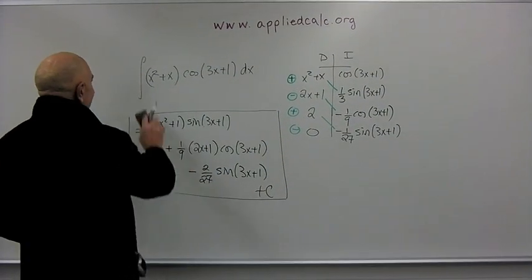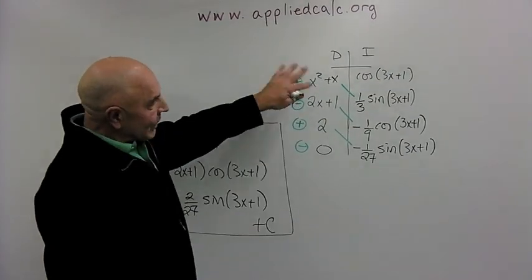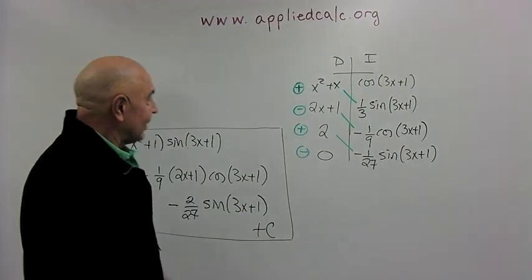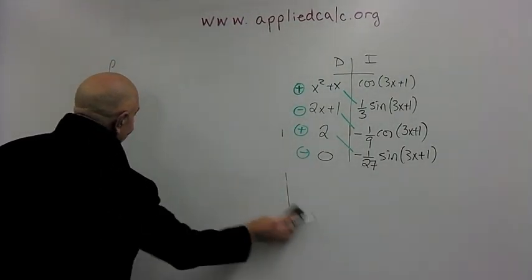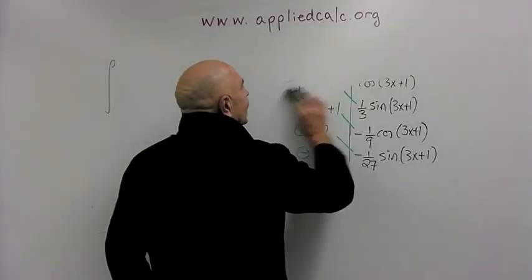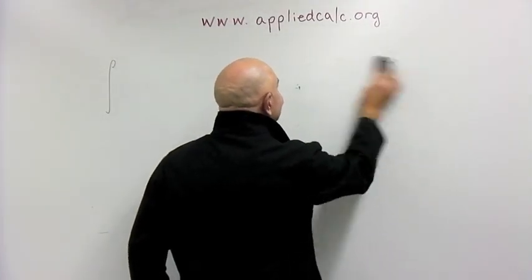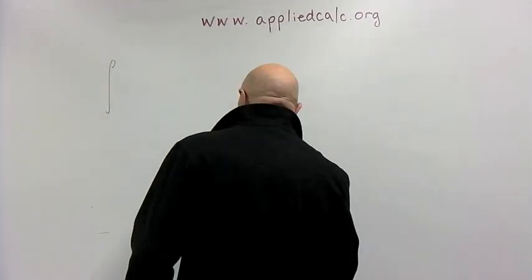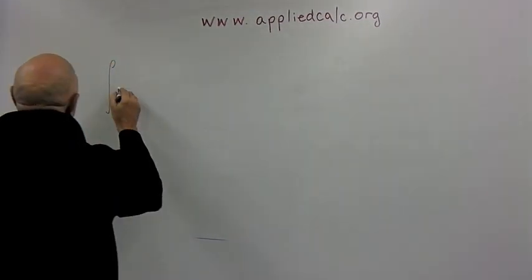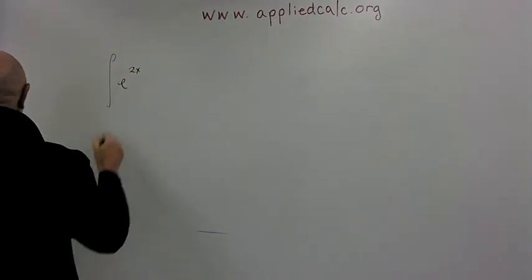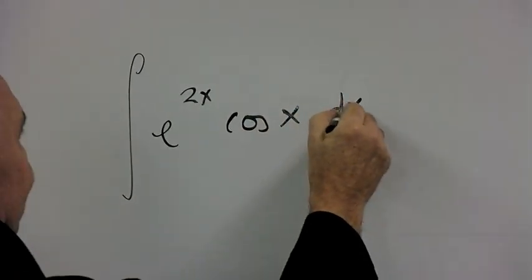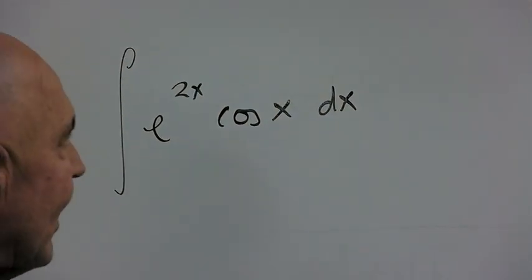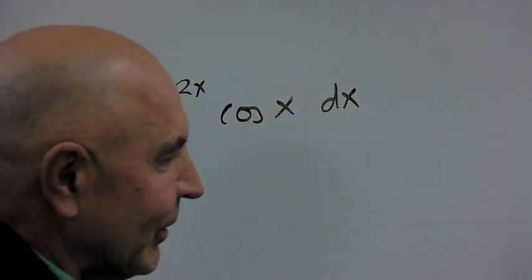And here comes a bit more interesting one that doesn't work as simply as that, where you cannot simply differentiate and things go away. And we saw an example or two in the first part involving things like logarithms. Well, what happens if you multiply an exponential function like e to the 2x with a trigonometric function? And let's make it simple like cosine of x.